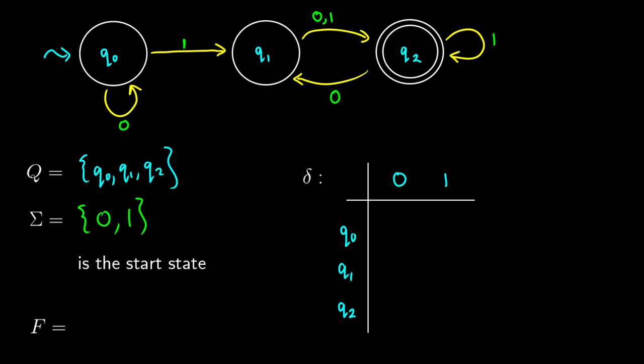What is our start state? Sometimes we have a squiggly arrow or a small pointer indicating the start state — here it tells us Q0 is the start state, and it's typical convention to use Q0 as the start state. Now F is the set of final states. In a diagram, all states are circles, but final states have a double circle, indicating that if we end in that state, the input is accepted. In this machine, we have just one final state: Q2. If a string ends in Q2, it's valid; if it ends in Q0 or Q1, it's not accepted.